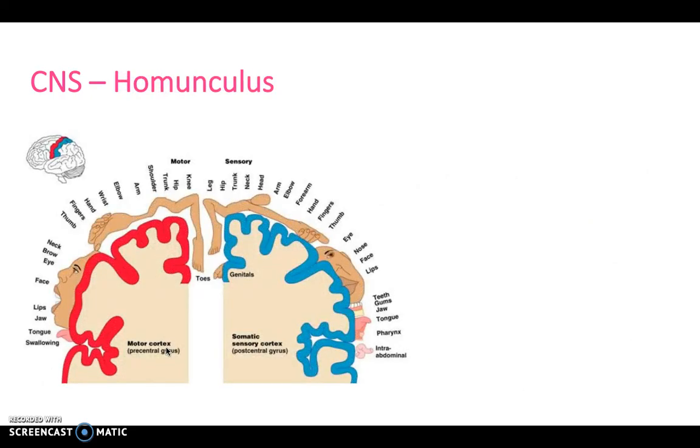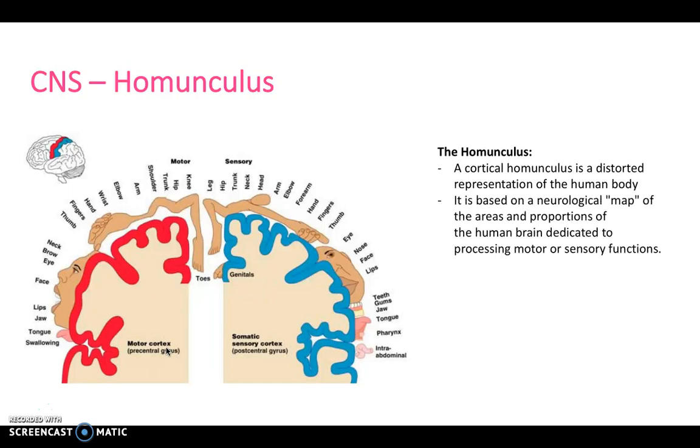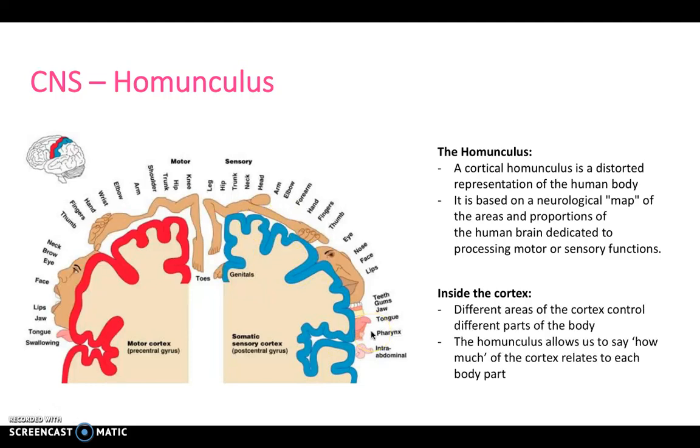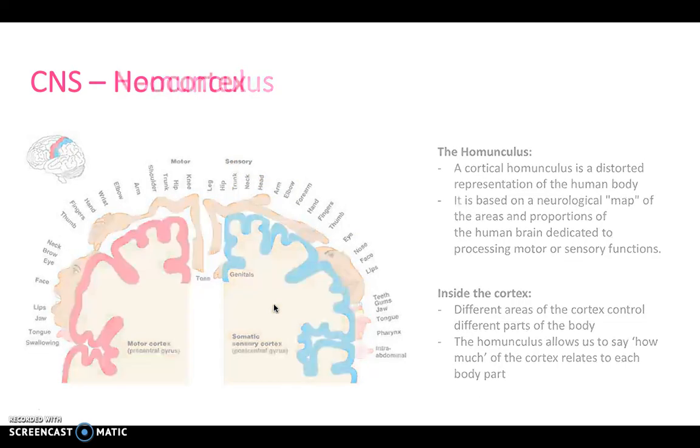The homunculus is a distorted representation of the human body based on a neurological map of the areas and proportions of the human brain dedicated to processing motor or sensory functions. The mouth, tongue, and face have a really high surface area on the motor cortex. We have a lot of motor output to the face. This can be seen on the sensory aspect as well. Different areas control different parts of the body, and the homunculus allows us to say how much of the cortex relates to each body part and how much control we have over each area.